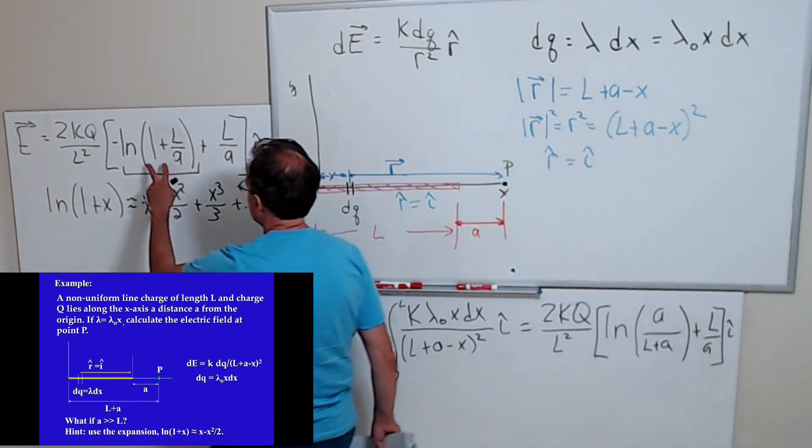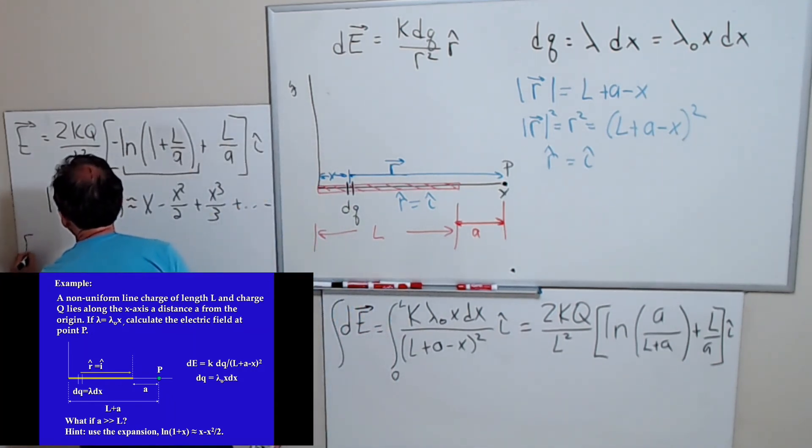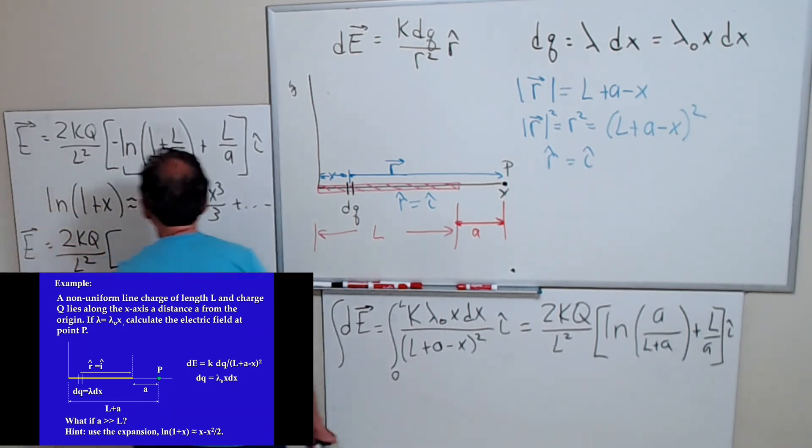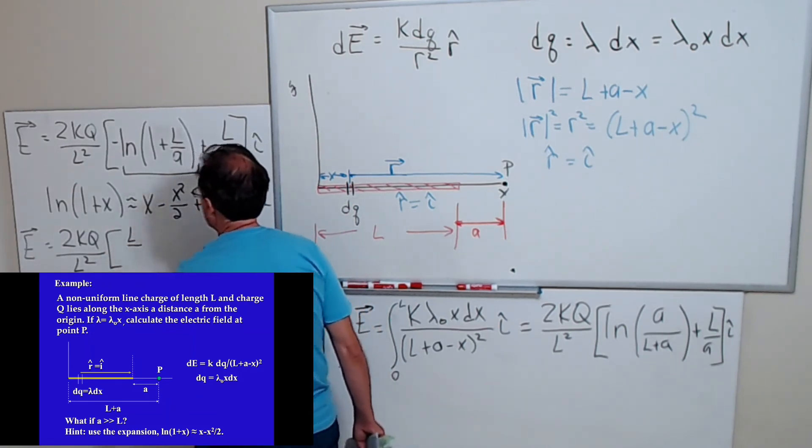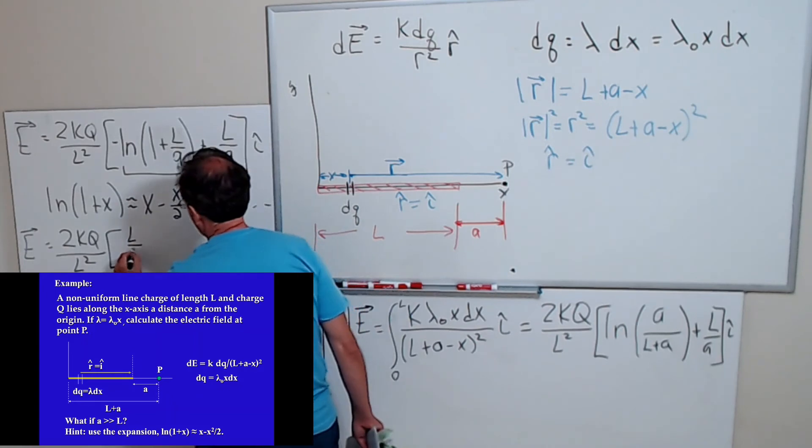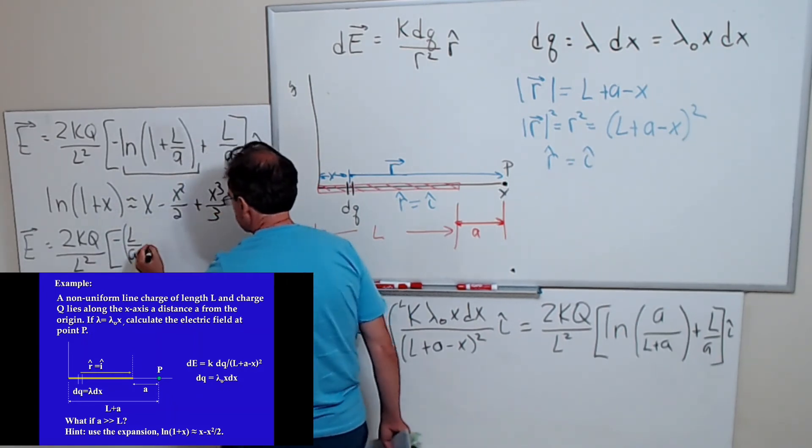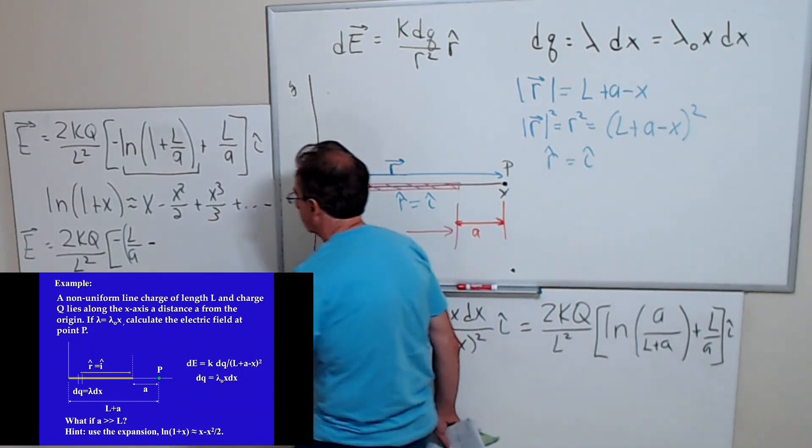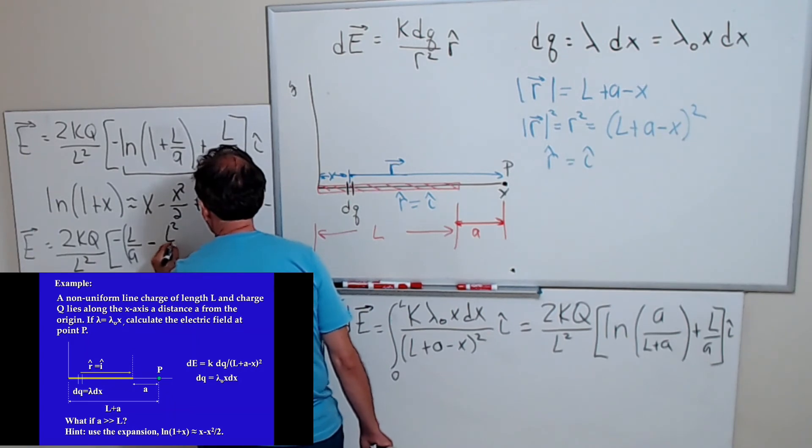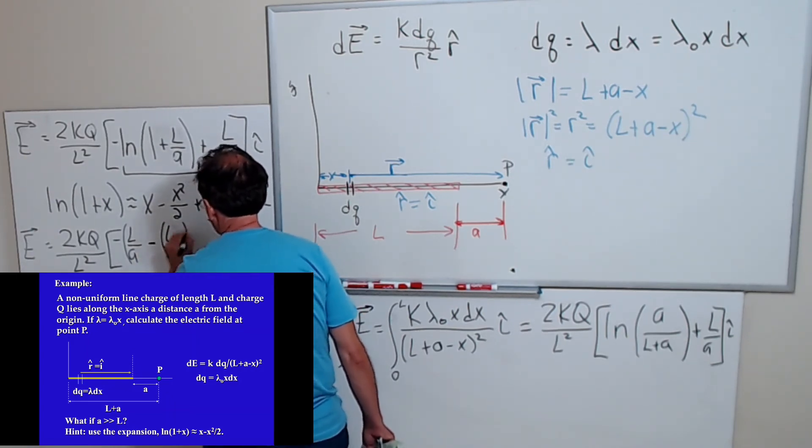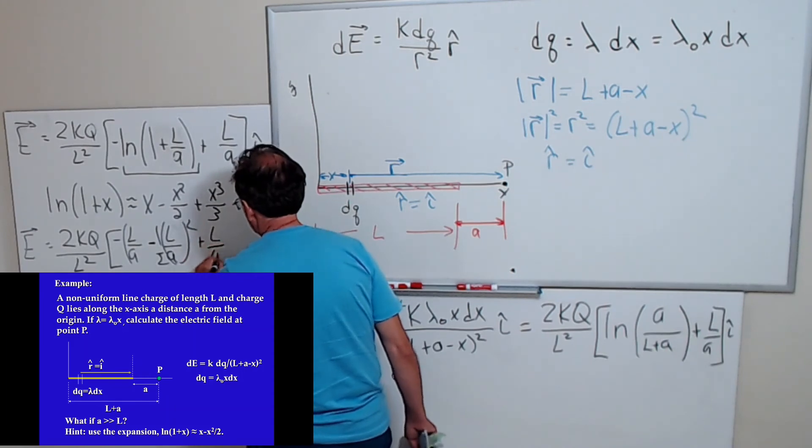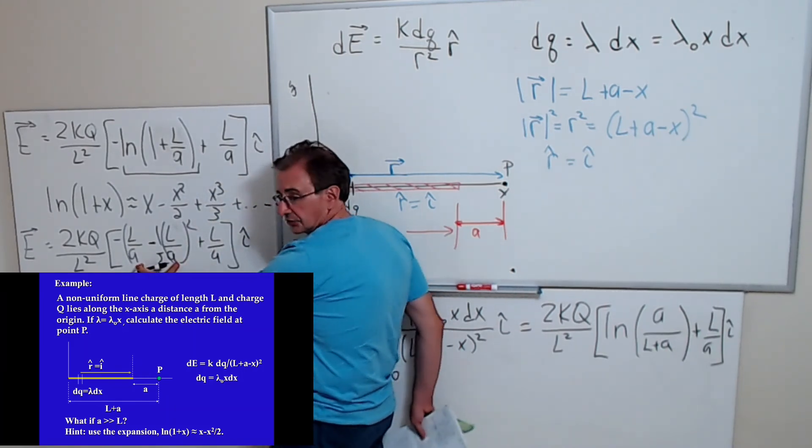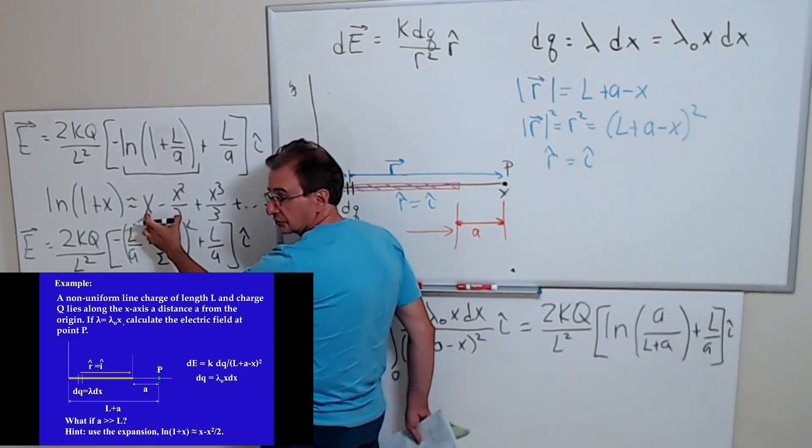Okay, so if I do that, then I rewrite this expression in the following way. Expanding this to the second term, I'm going to have L over A minus L squared, L over A squared times a half plus L over A. So these two represent the first two terms in this expansion.